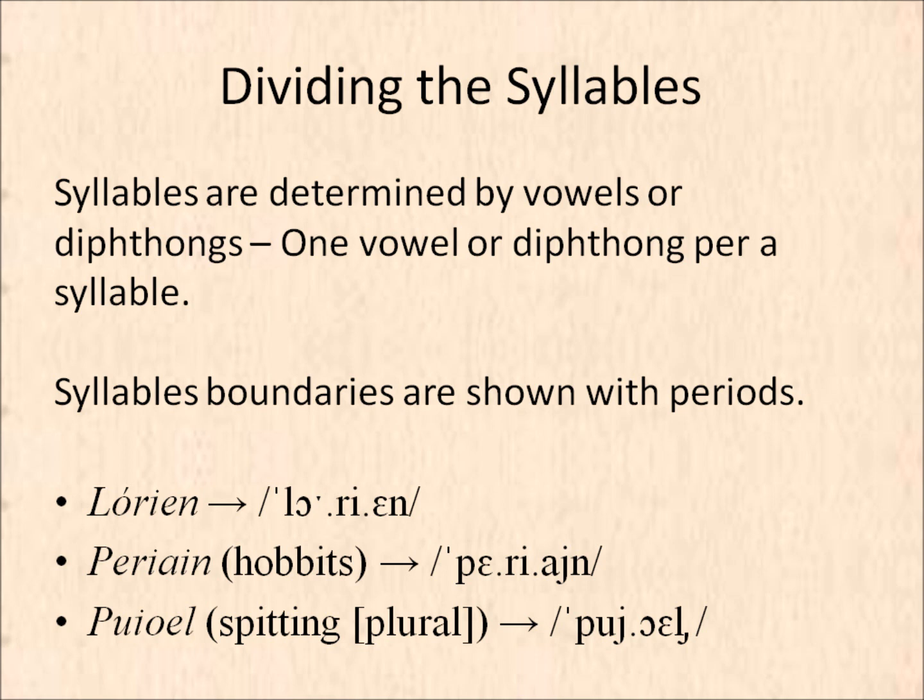But it's not three different syllables — I, A, and IN. It's just V and IN. And the last example is Puiol. Two diphthongs can be sitting next to each other in Sindarin. This is two syllables, not four: Pui and ol.